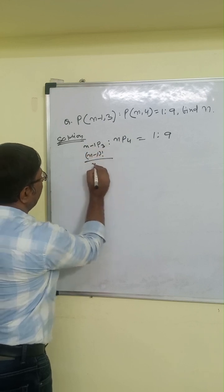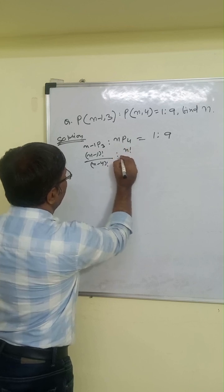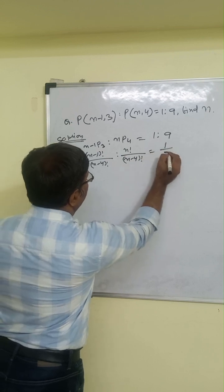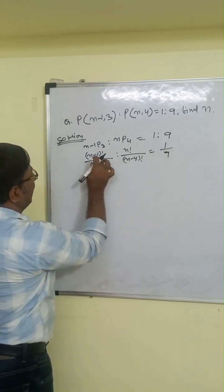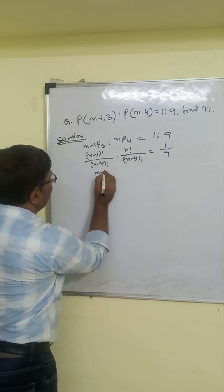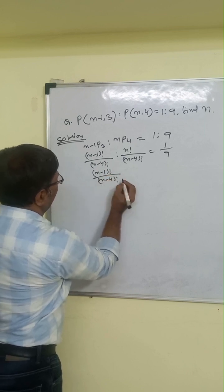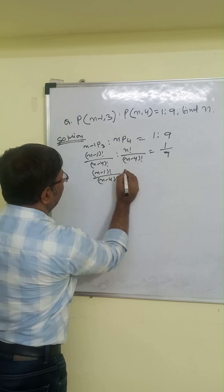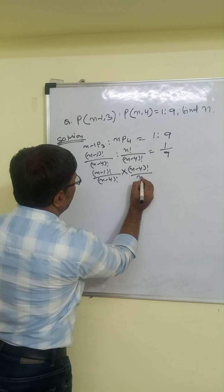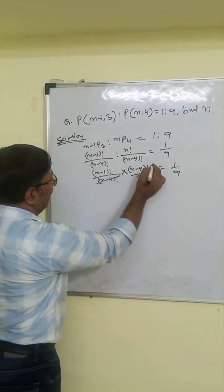n minus 1 minus 3, so we get n minus 4 factorial. The ratio is n factorial over n minus 4 factorial, and this equals 1/9. Now, n minus 1 and n minus 4 — we can write n minus 1 factorial divided by n minus 4 factorial. This ratio, when we take the reciprocal of n minus 4 factorial over n, equals 1/9.